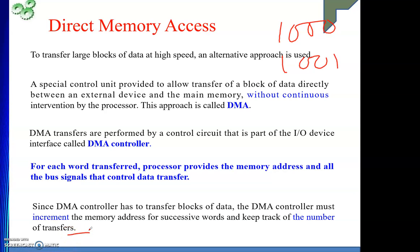The DMA controller takes control of the system bus from the processor. Before this handover, the processor provides the starting address, the word count, and the communication direction to the DMA controller. The processor will provide all this initial data to the DMA controller.